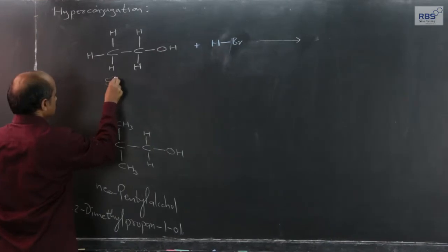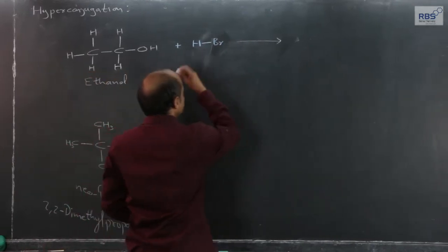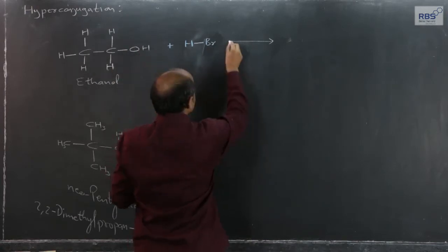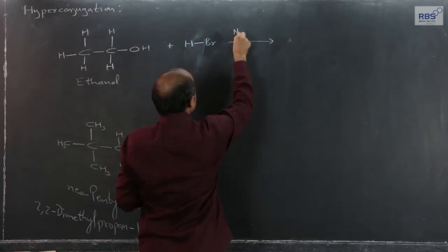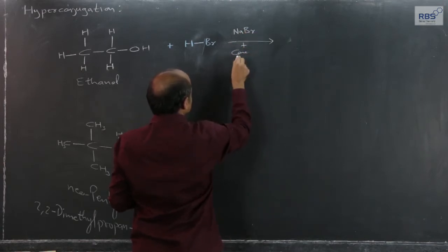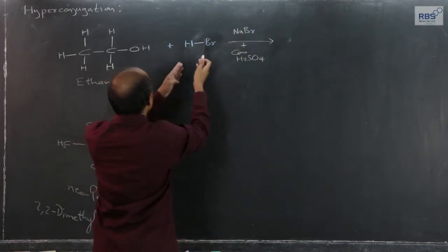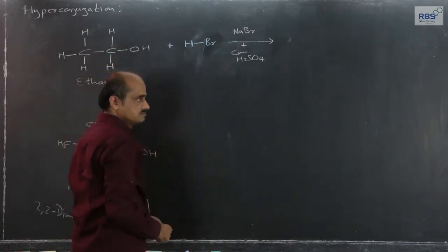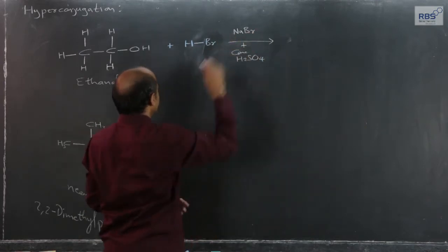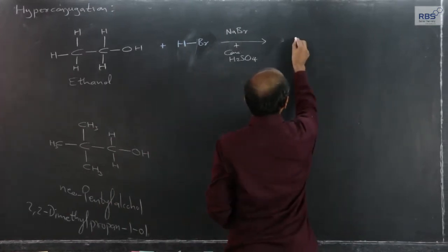Ethanol reacted with HBr. Of course, to obtain HBr to react with ethyl alcohol, we have to use NaBr and concentrated H₂SO₄. This mixture will generate HBr, and HBr will react with ethanol. The product we get is this.